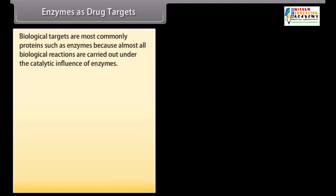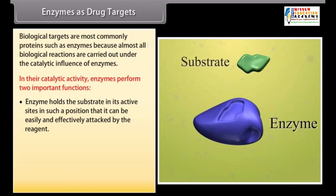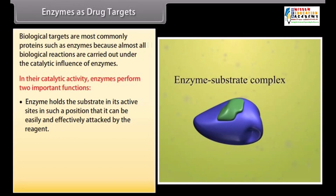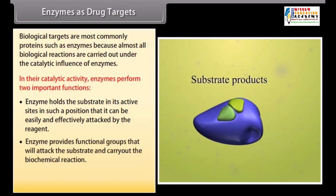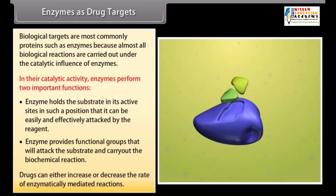Biological targets are most commonly proteins such as enzymes, because almost all biological reactions are carried out under the catalytic influence of enzymes. In their catalytic activity, enzymes perform two important functions: enzymes hold the substrate at their active sites in such a position that it can be easily and effectively attacked by the reagent; and enzymes provide functional groups that will attack the substrate and carry out the biochemical reaction. Drugs can either increase or decrease the rate of enzymatically mediated reactions.